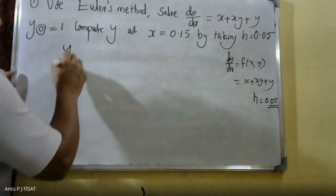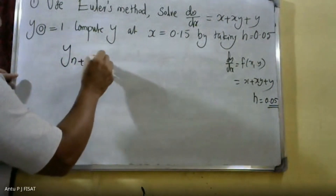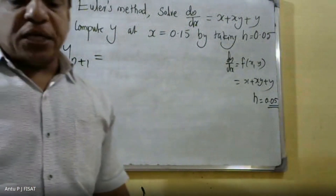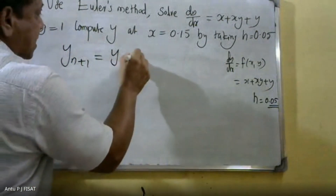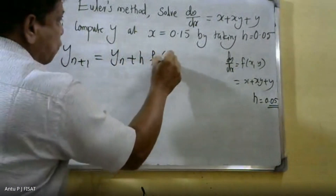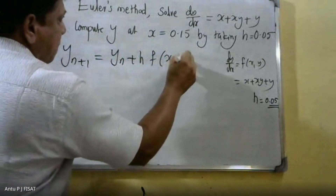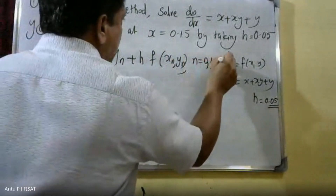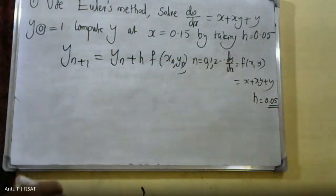The Euler method formula is: y_(n+1) = y_n + h · f(x_n, y_n), where n = 0, 1, 2, etc.